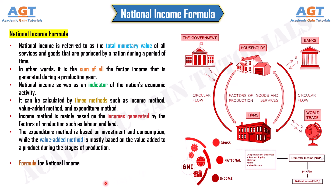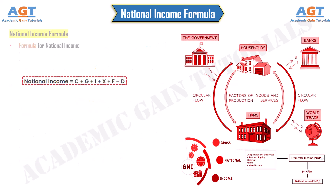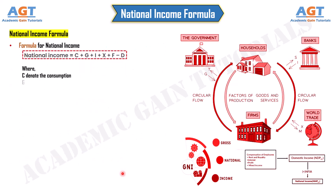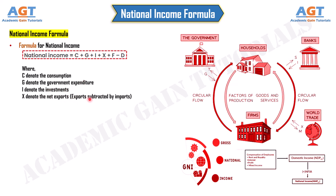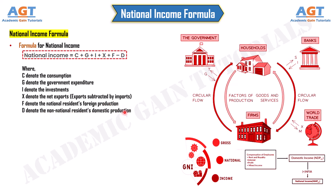The formula for national income is: National Income = C + G + I + X + F − D. Where C denotes consumption, G denotes government expenditure, I denotes investments, X denotes net exports (exports subtracted by imports), F denotes national resident foreign production, and D denotes non-national resident domestic production.